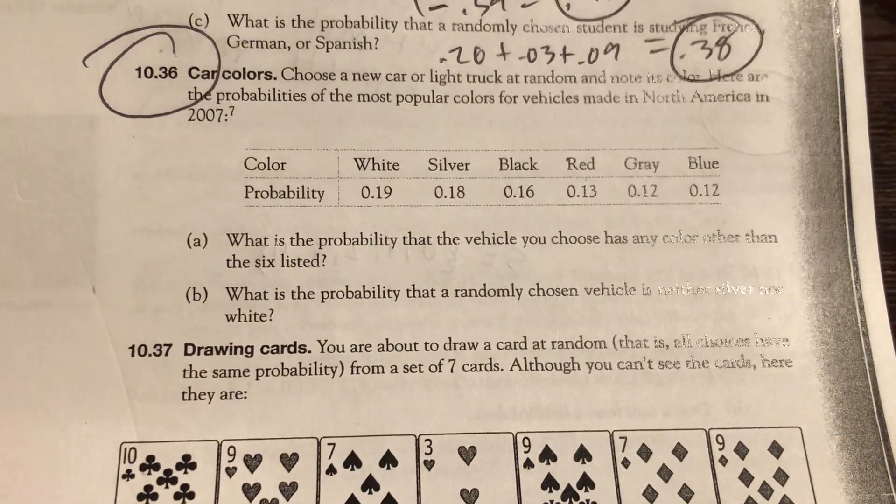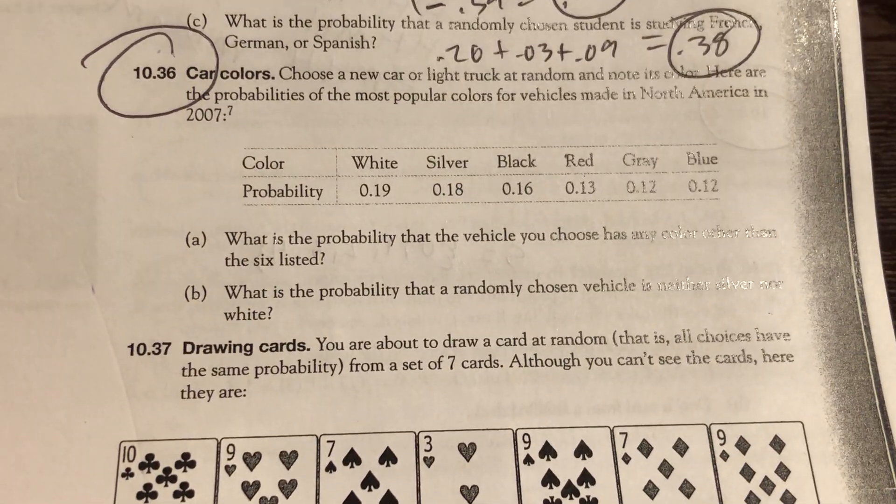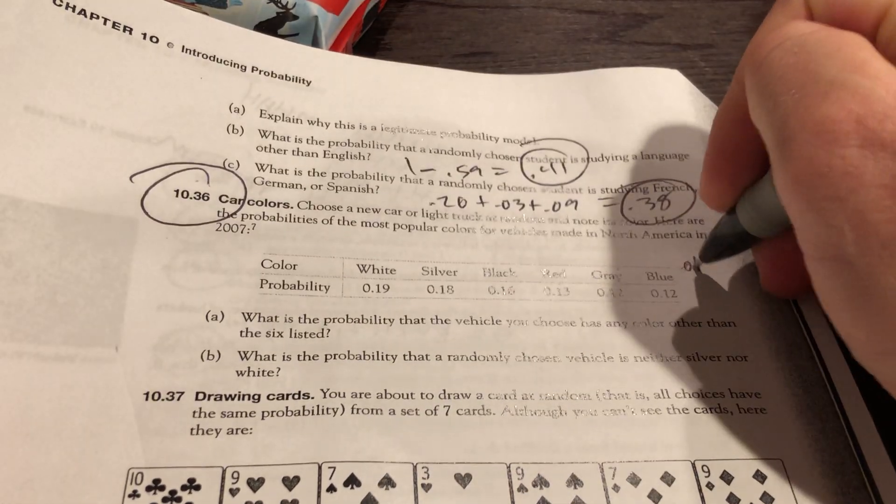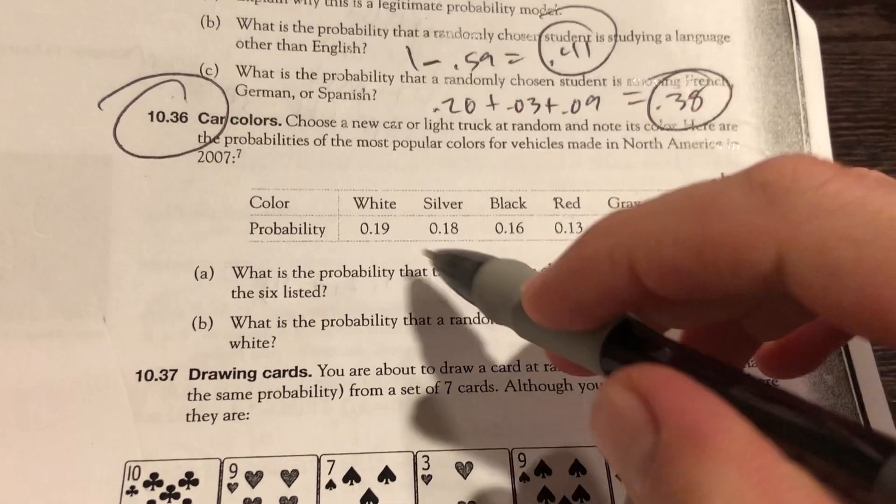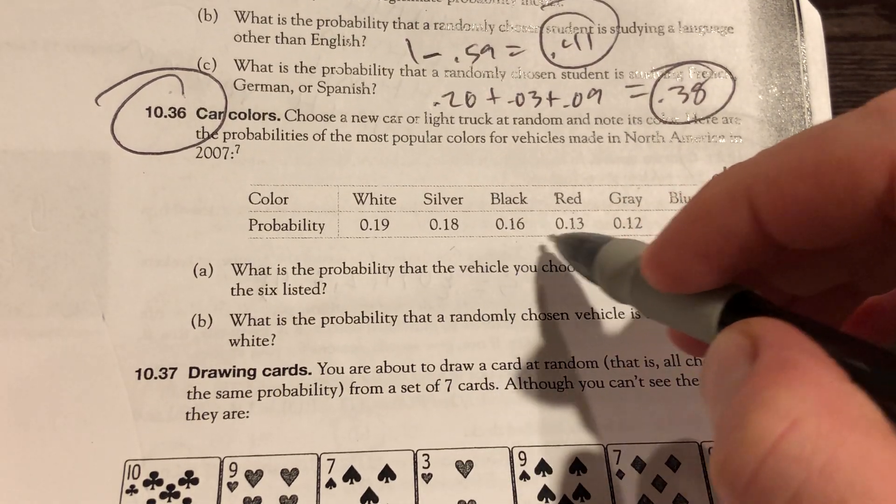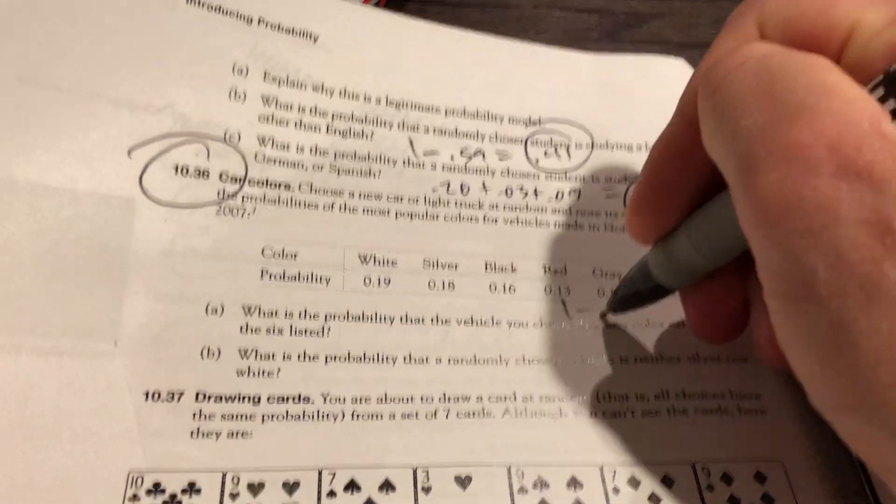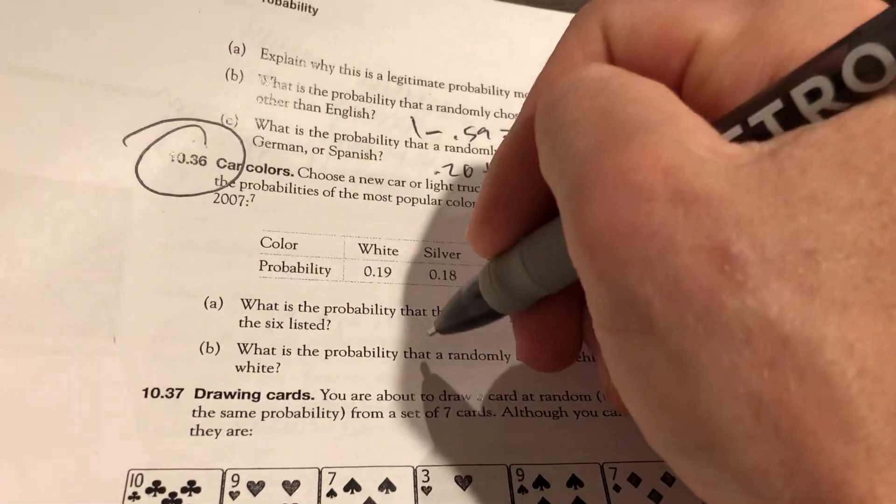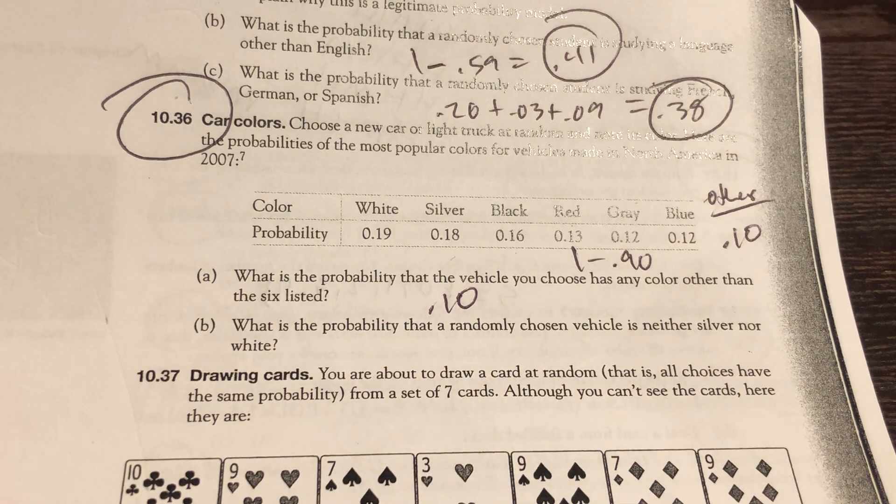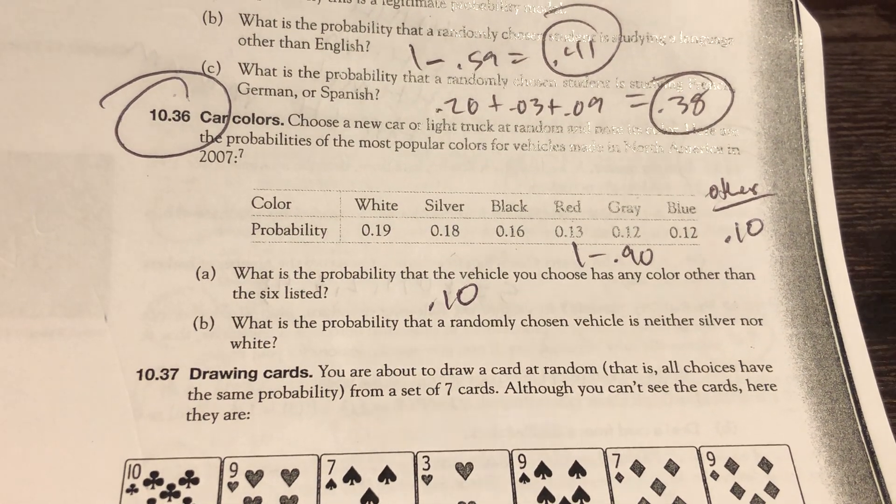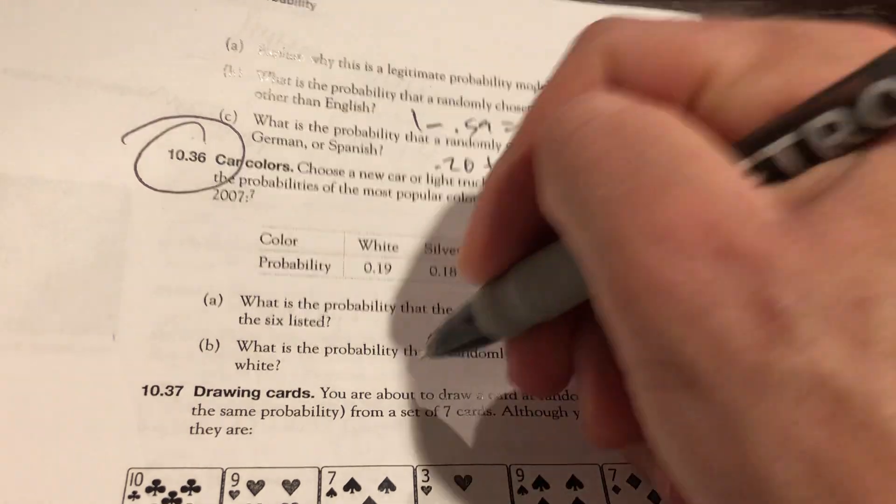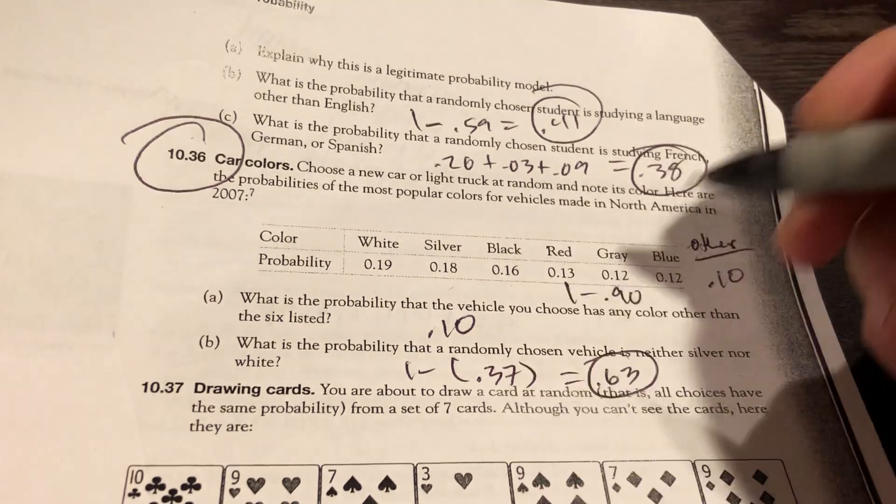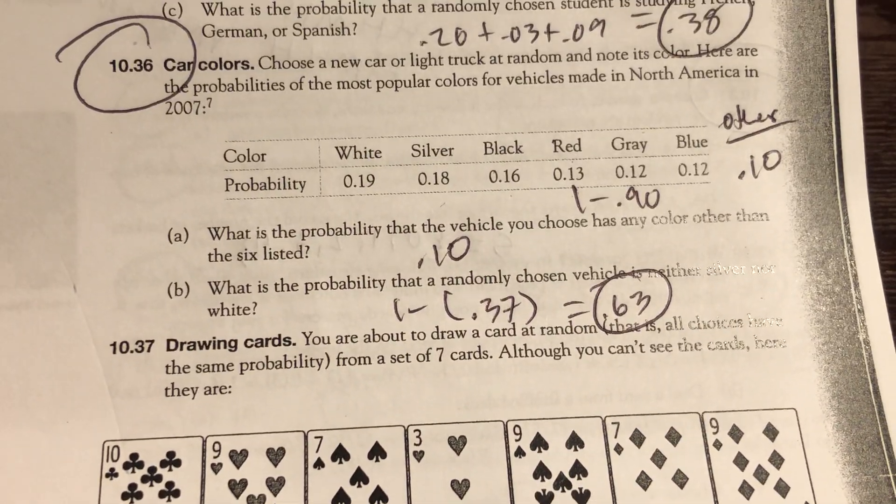10.36. What's the probability that the vehicle you choose has any other color than the six listed? So we're going to go other. That's 37, 53, 66, 78, 90. One minus 0.90. The other category is that. What's the probability that you choose something that is neither silver nor white? The first two. Add up 19 and 18. Subtract that from one.